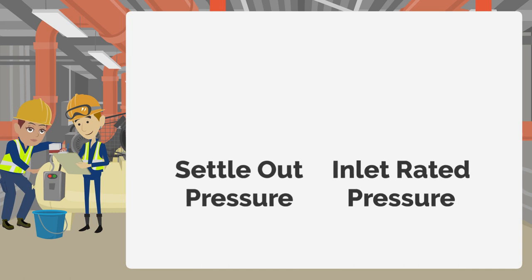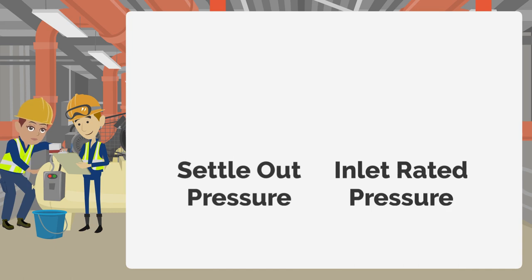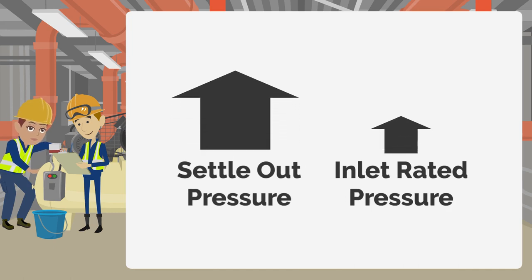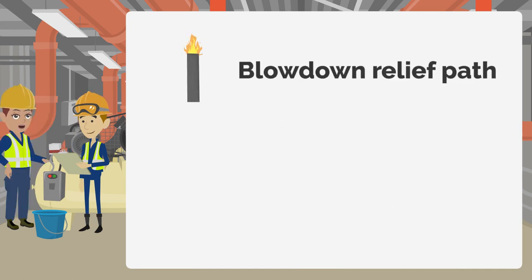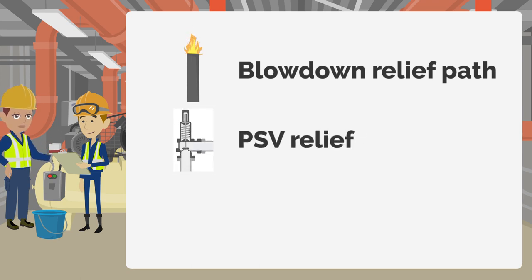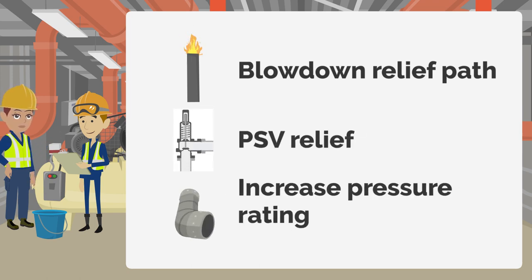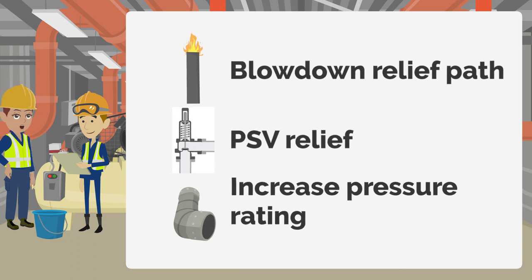Second, if the settle-out pressure is above the rating of the compressor inlet, having a blowdown relief path, a pressure safety valve set for settle-out pressure, or increasing the pressure ratings at the compressor or pump inlet are options to prevent settle-out overpressure.